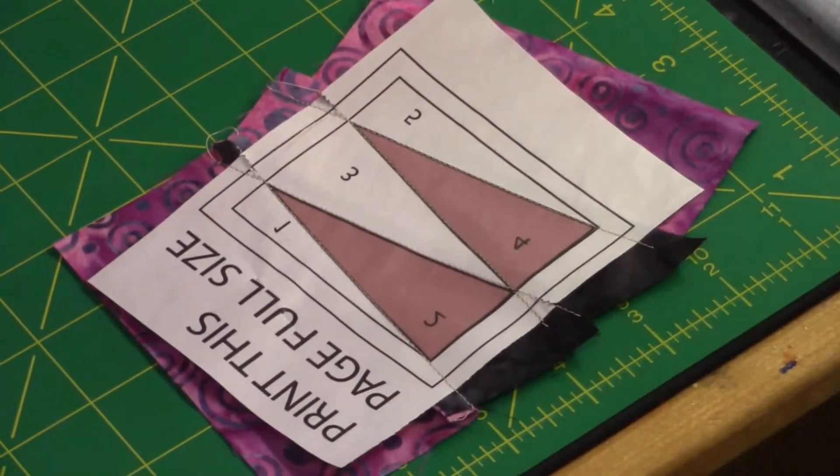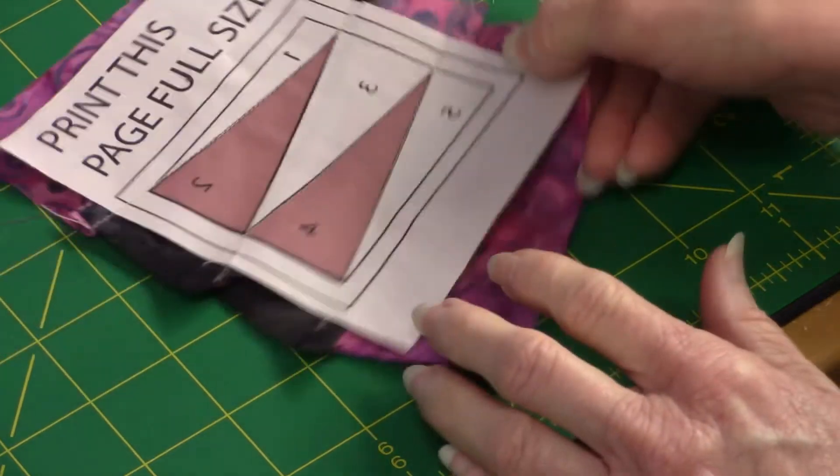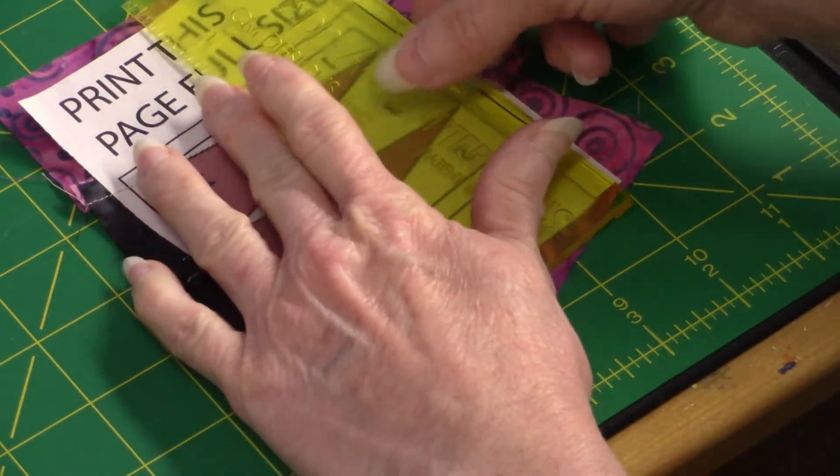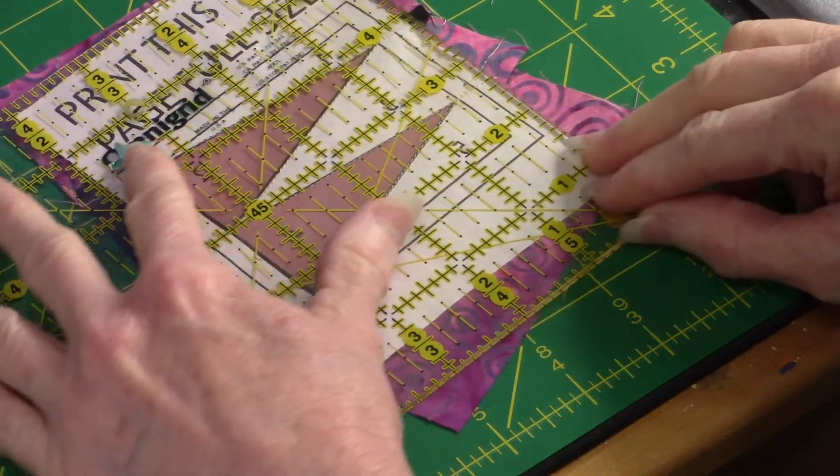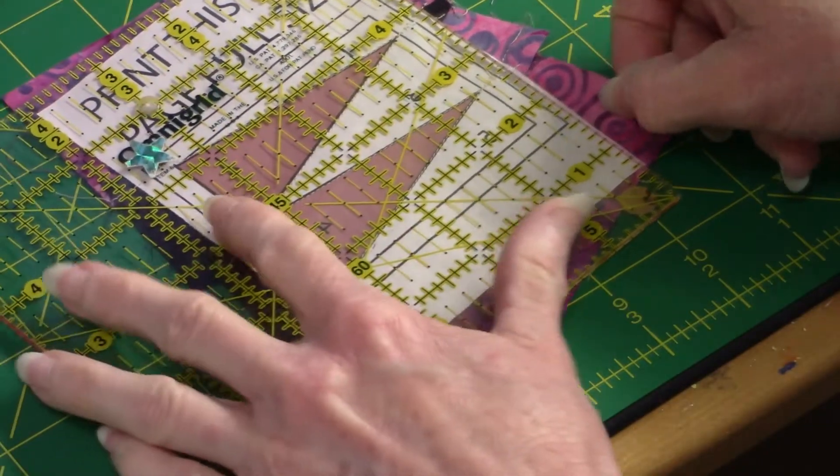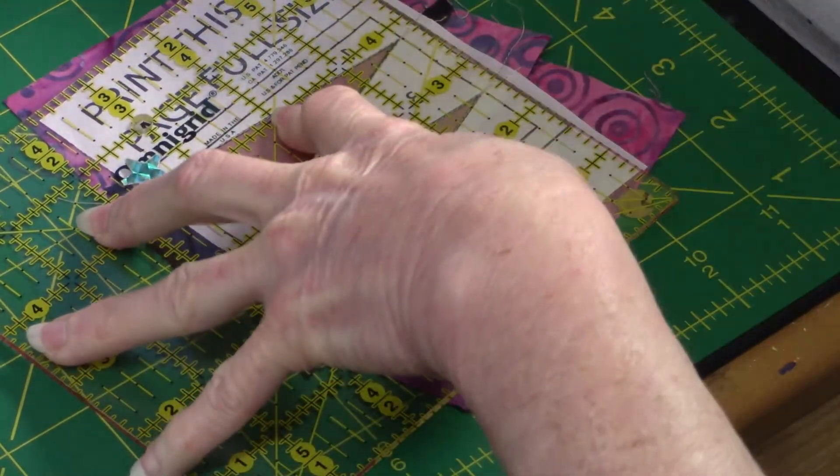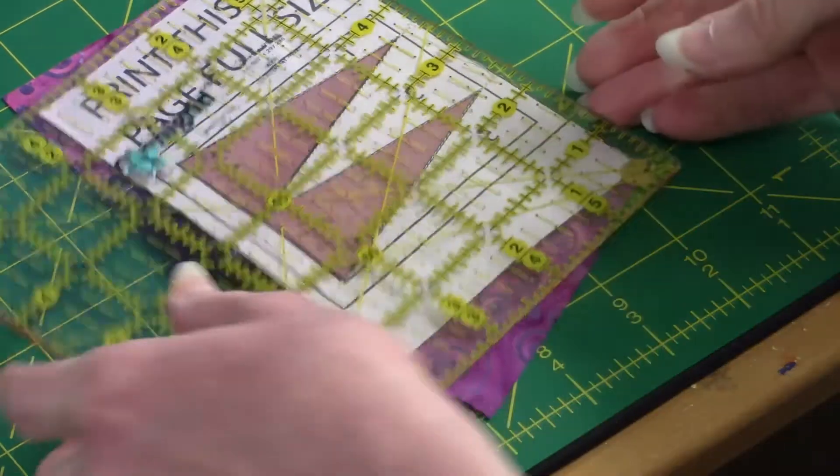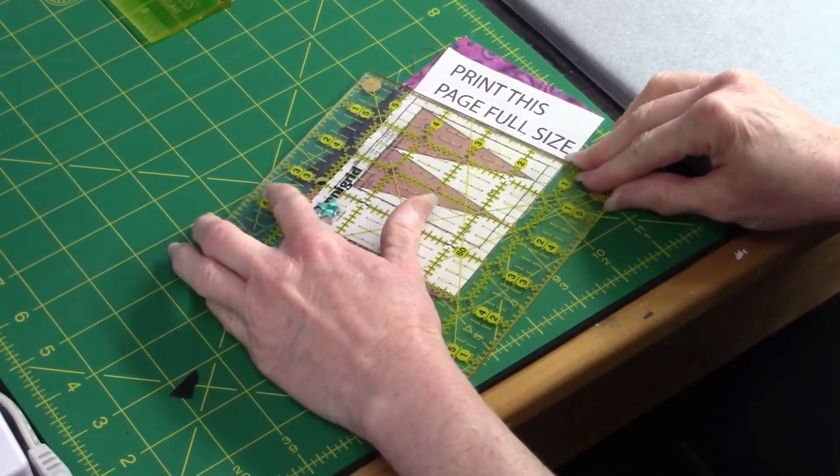And now I'm ready to trim it. And you see there's excess fabric around the perimeter. So now you can take this ruler if you want, or usually I just use my regular little six-inch, six-and-a-half-inch ruler, and I'm going to trim it right along the outside lines. Don't take off any more than right around the outside of the block. See how it lined up right with that line? And I'm going to trim the whole block all the way around.